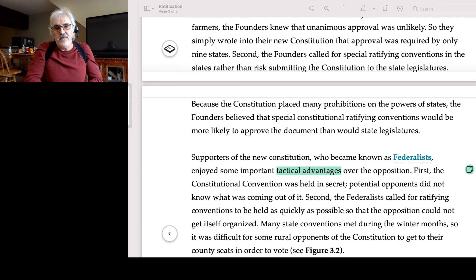Second, the Federalists called for ratifying conventions to be held as quickly as possible so that the opposition could not get itself organized. Many state conventions met during the winter months, so it was difficult for some rural opponents of the Constitution to get to their county seats in order to vote. Final point that this was a coup d'etat, number four: Just like a coup d'etat, the Founding Fathers held the friendly ratifying conventions as quickly as possible and sometimes during winter in order to prevent the opposition from organizing. Is this clear?